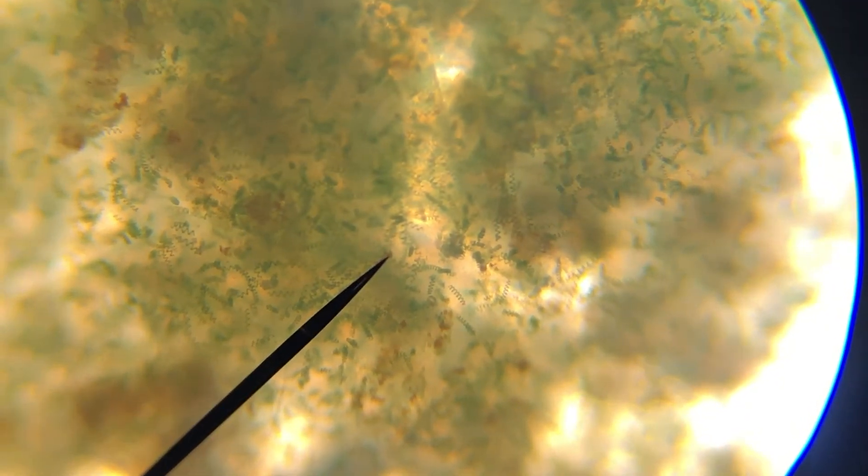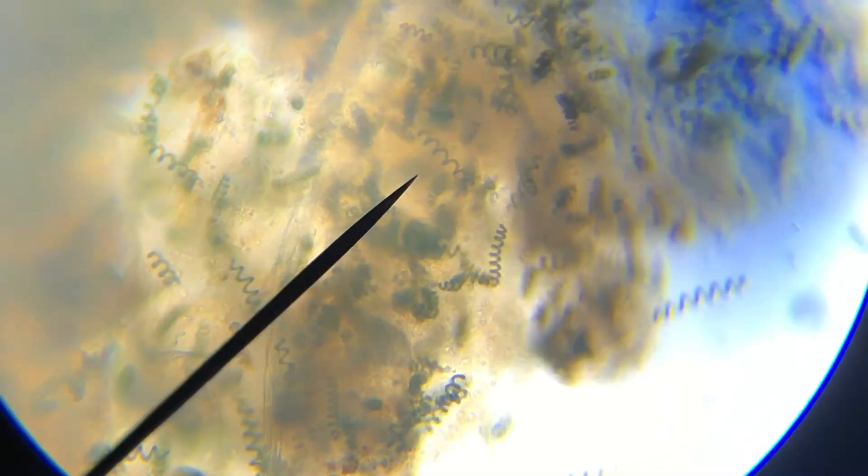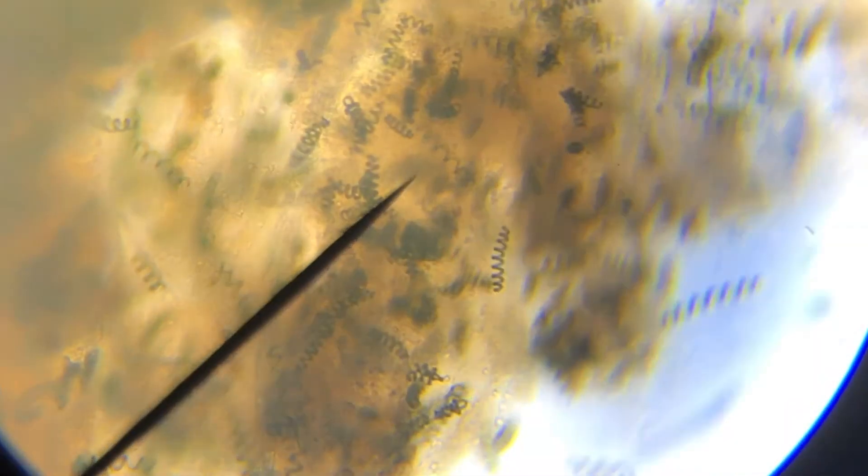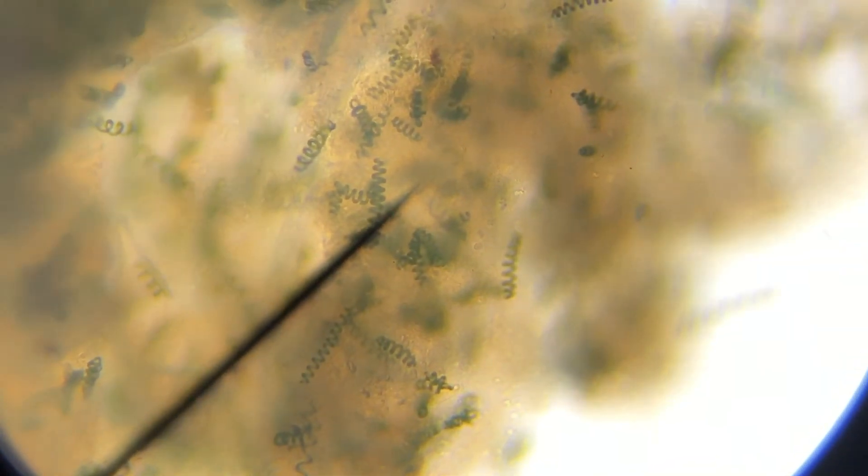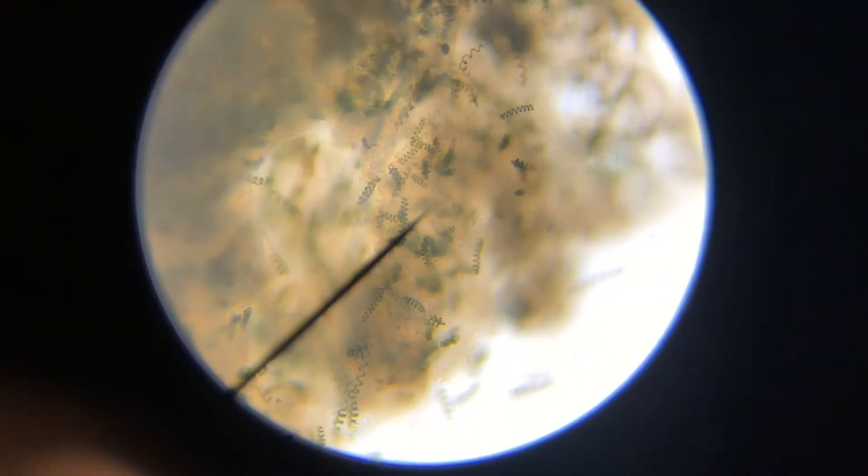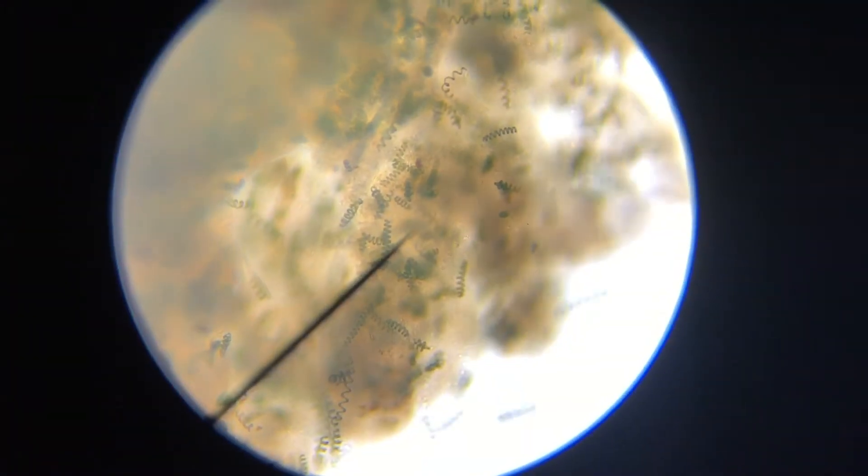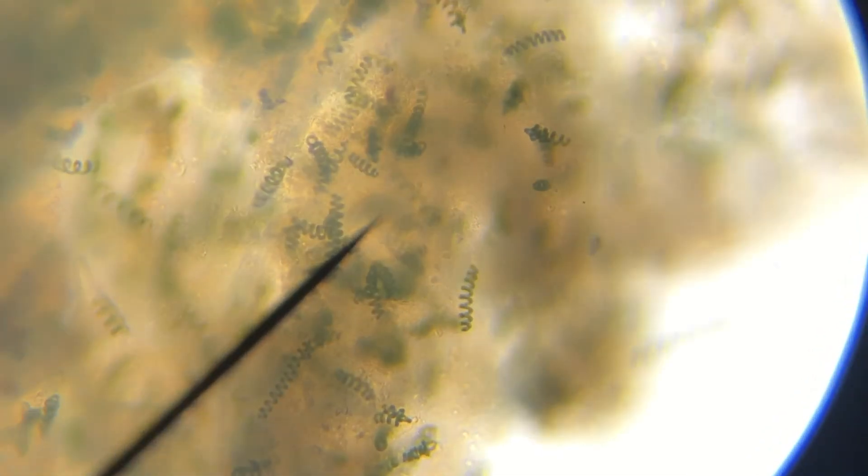Viewing the dead spirulina under the microscope was more exciting than I thought. It looked like this large brown mash where you can see living spirulina suspended in it, but the rest of the yellowish cloud was a sort of macerated gravy mush.